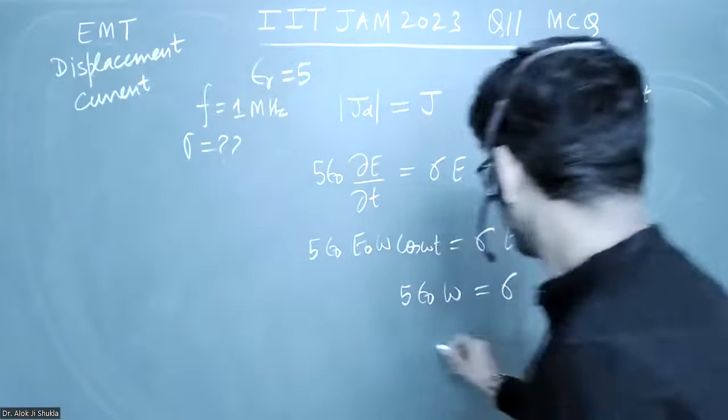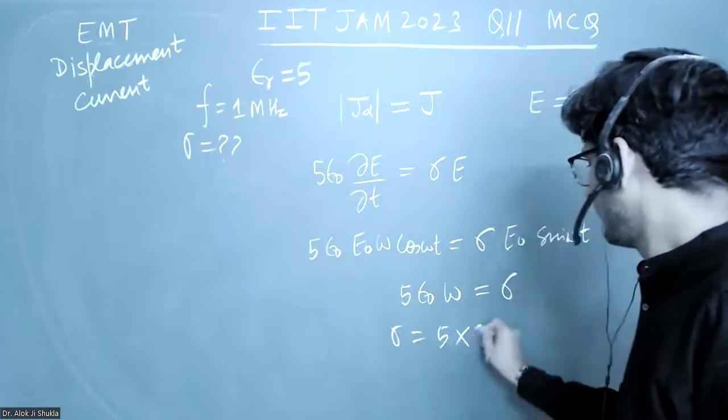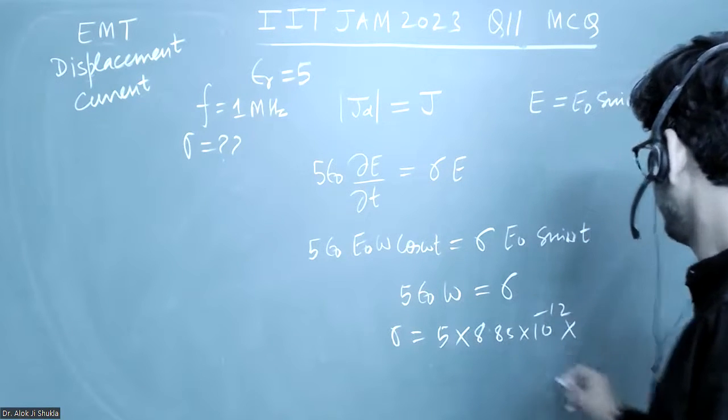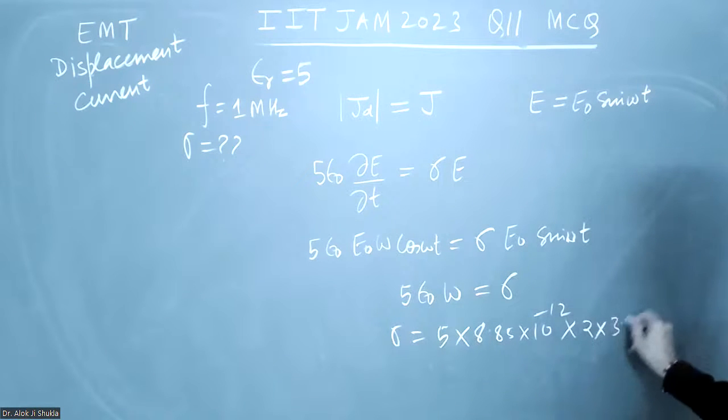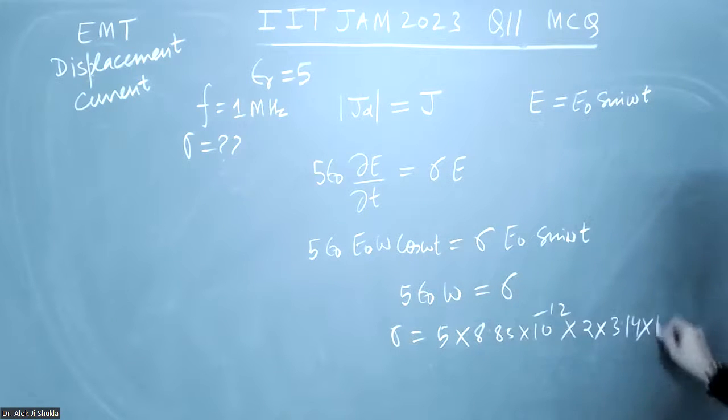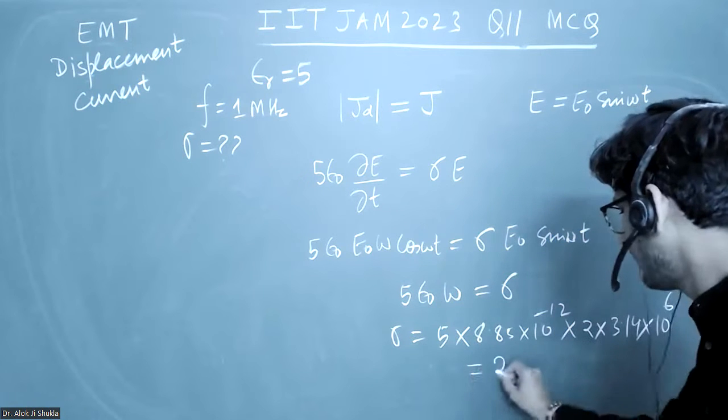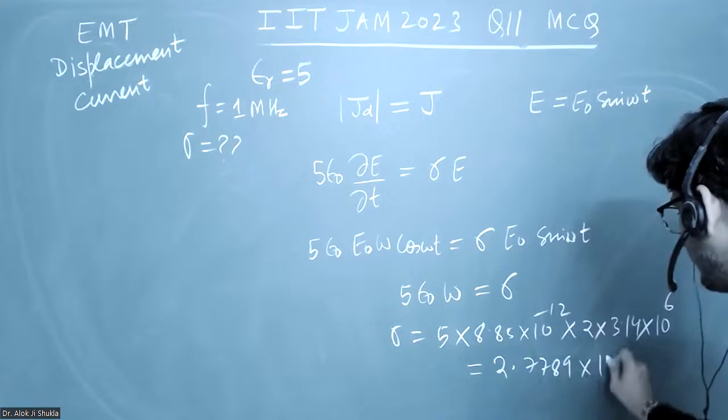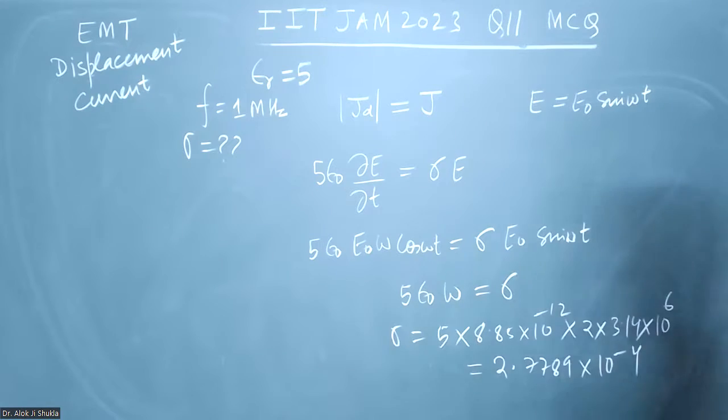This will become σ = 5 × 8.85 × 10⁻¹² × 2π × f, where frequency is 10⁶. So this is the value: 5 × 8.85 × 10⁻¹² × 2π × 10⁶. When you calculate this, it comes out to be 2.7789 × 10⁻⁴.